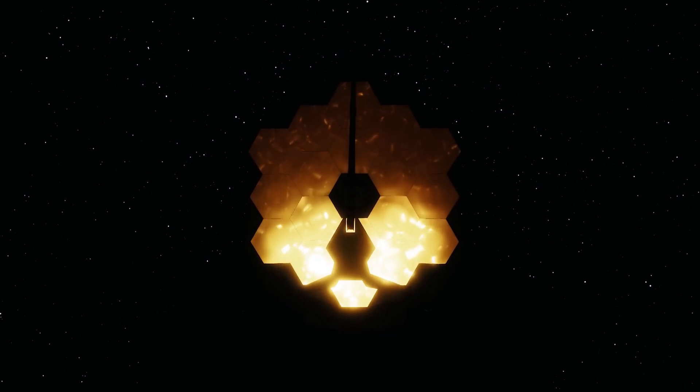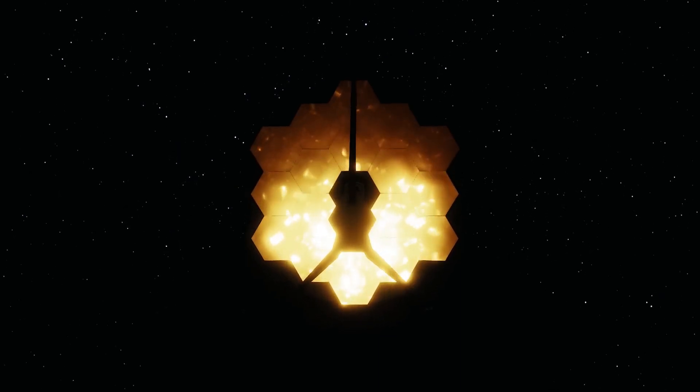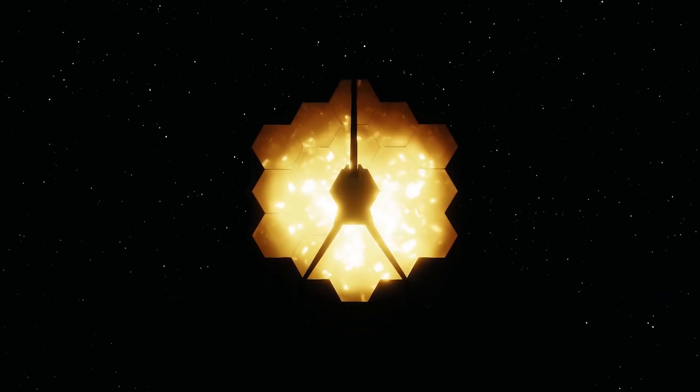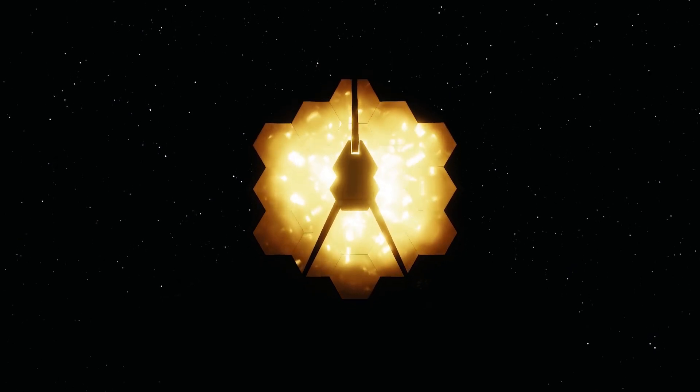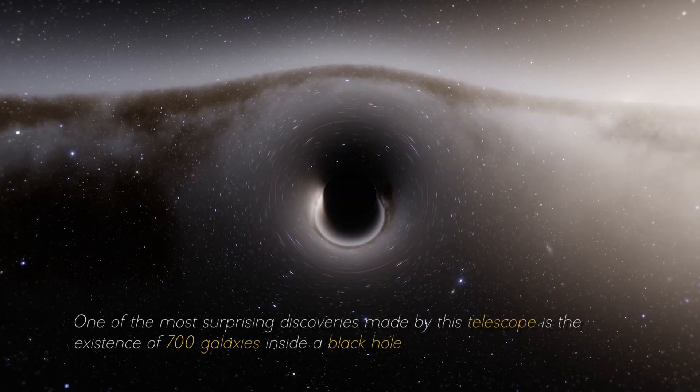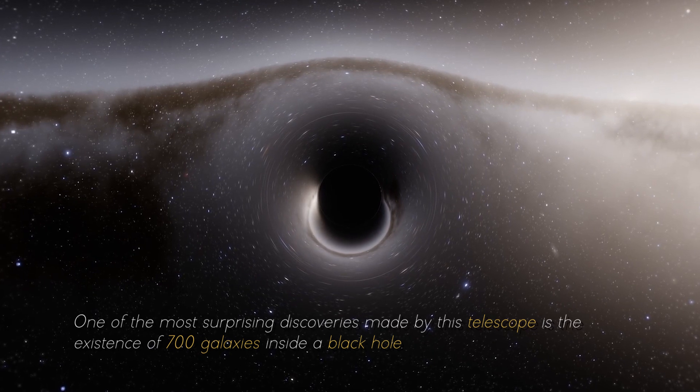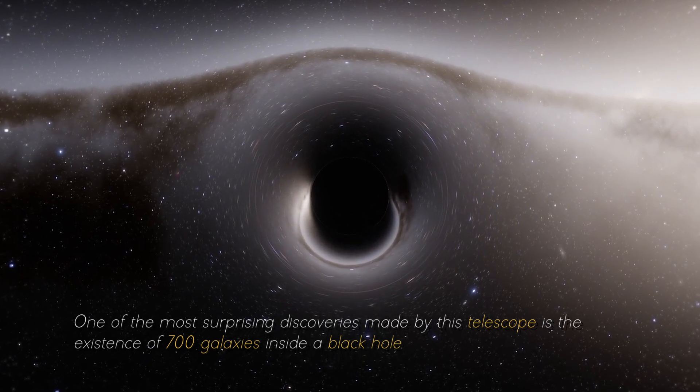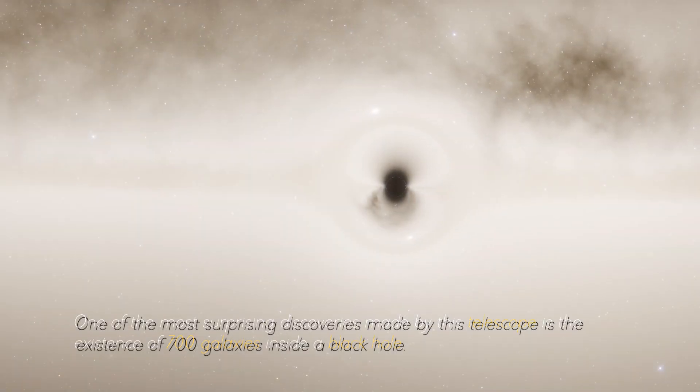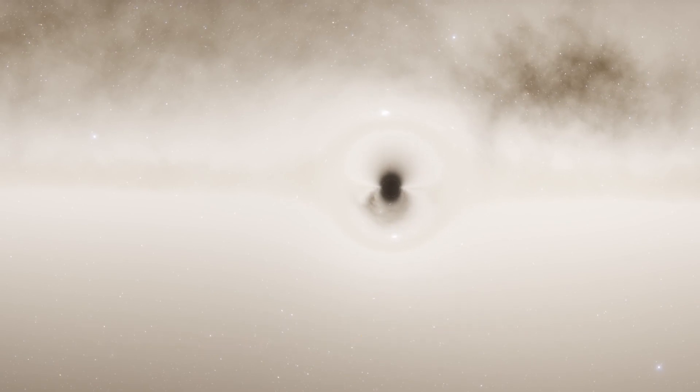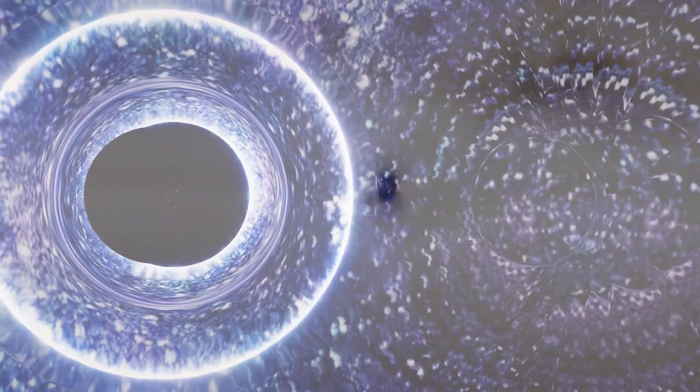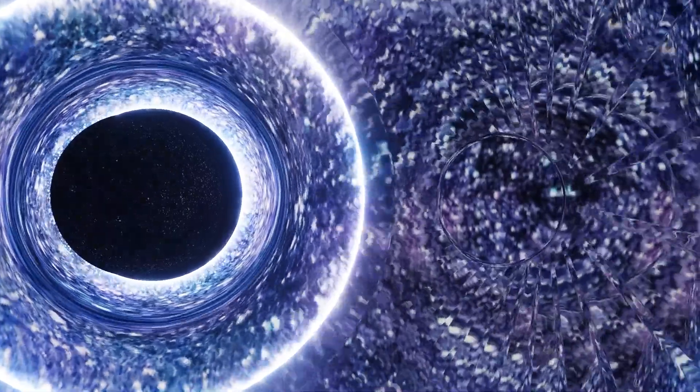However, the James Webb Space Telescope has the ability to observe beyond what any other technology has yet achieved. One of the most surprising discoveries made by this telescope is the existence of 700 galaxies inside a black hole. This finding challenges the conventional understanding of how black holes work.